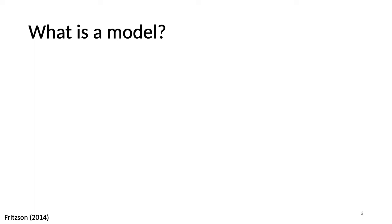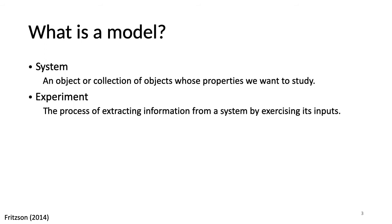So what is a model? In order to define the model, I will define the system and the experiment. A system is an object or collection of objects whose properties we want to study, and an experiment is the process of extracting information from a system by exercising its inputs.